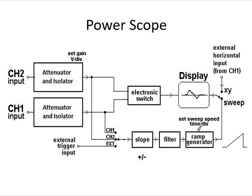Today we start the next part of unit number 4, that is electronic instrumentation. In the previous lecture we covered three different block diagrams and their working principles: the digital multimeter, function generator, and digital storage oscilloscope.